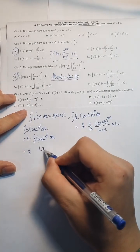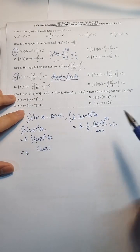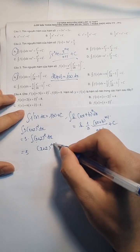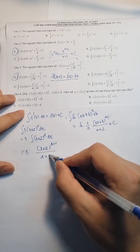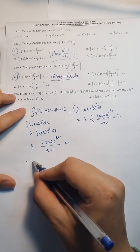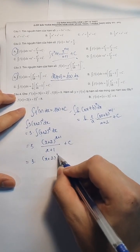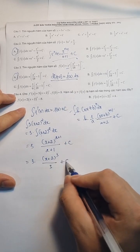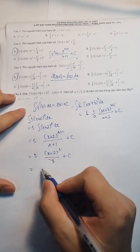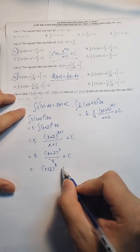(X+2) mũ N+1, tức là mũ (2+1). Trên cho (2+1) và cộng với C. Vậy nó bằng 3 lần (X+2) mũ 3 trên cho 3 nhé. Xong rồi bây giờ các bạn sẽ rút ra: nó chỉ bằng (X+2)³ và cộng với C.